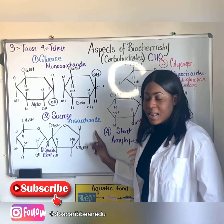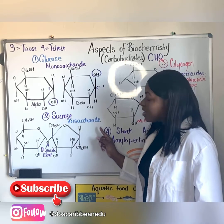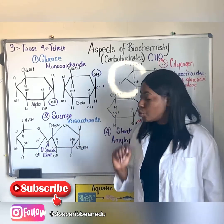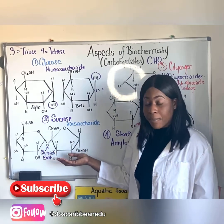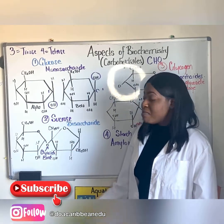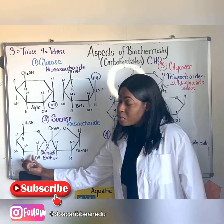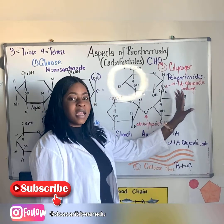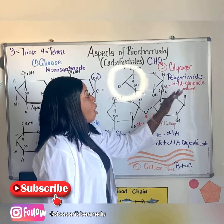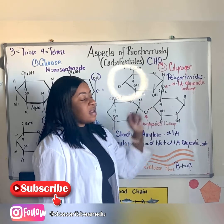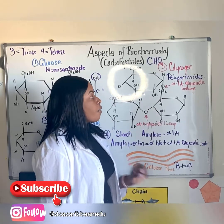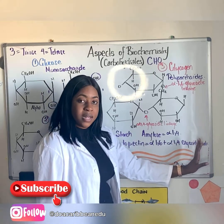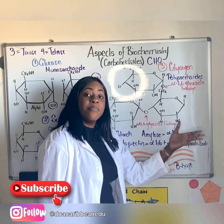Secondly, disaccharide: di means two, saccharide means sugar, so a disaccharide is made up of two sugar molecules. A primary example is sucrose, being made up of glucose and fructose connected by a glycosidic bond. Thirdly, polysaccharides: poly means many, saccharide means sugar. Therefore polysaccharides are made up of many repeated sugar units, whether linearly or branched.